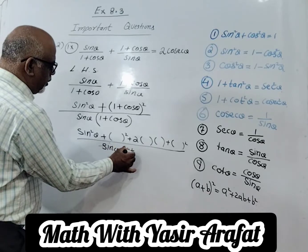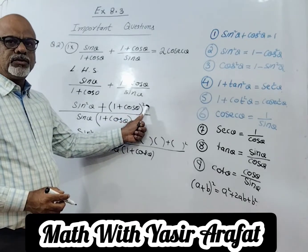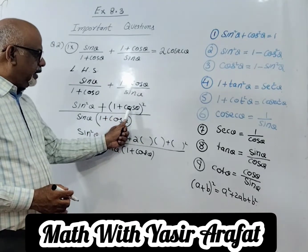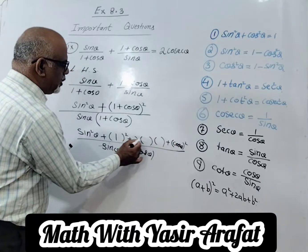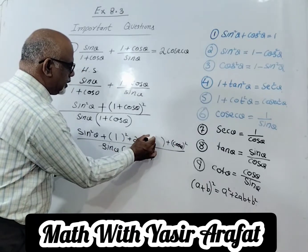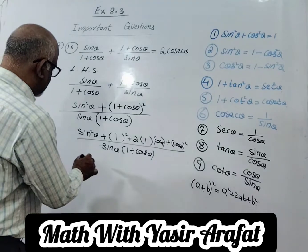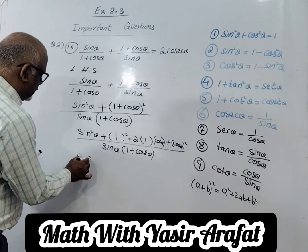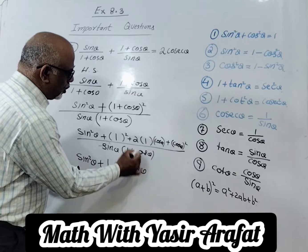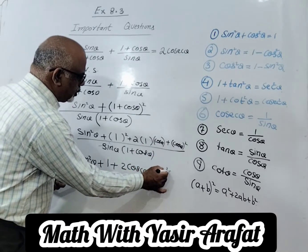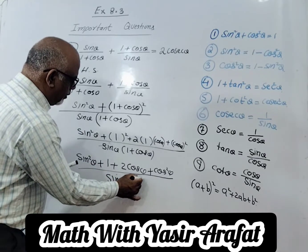The sin θ over (1 + cos θ) part remains the same. For (1 + cos θ)², with a = 1 and b = cos θ: a² = 1, 2ab = 2cos θ, and b² = cos²θ. So expanding: sin²θ + 1 + 2cos θ + cos²θ, all divided by sin θ into (1 + cos θ). Now sin²θ + cos²θ = 1, so the numerator becomes 1 + 1 + 2cos θ, and the whole expression is divided by sin θ into (1 + cos θ).